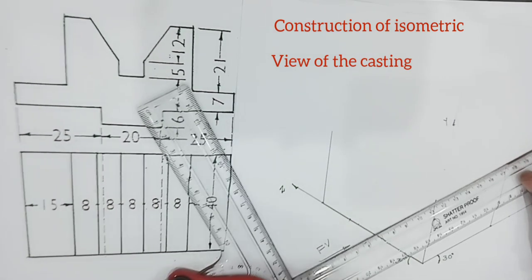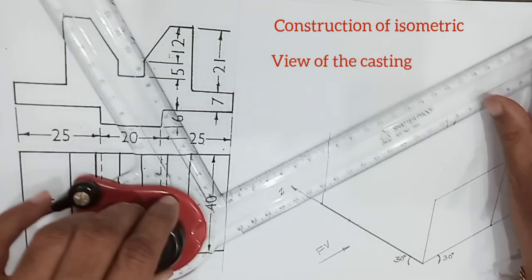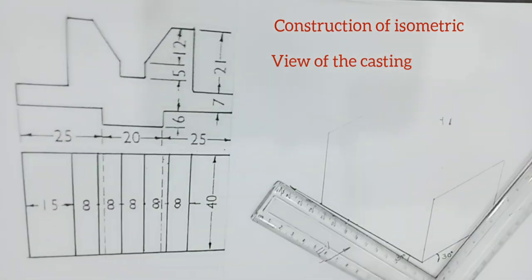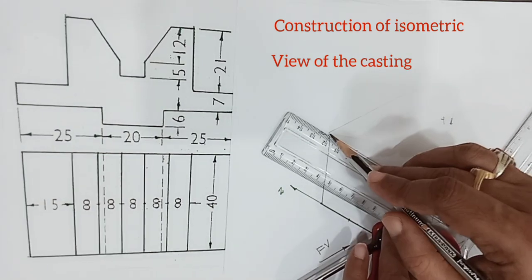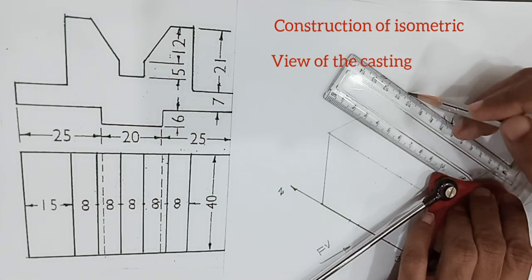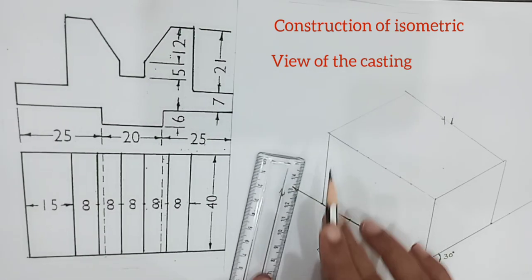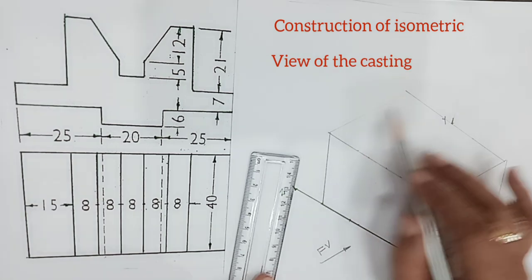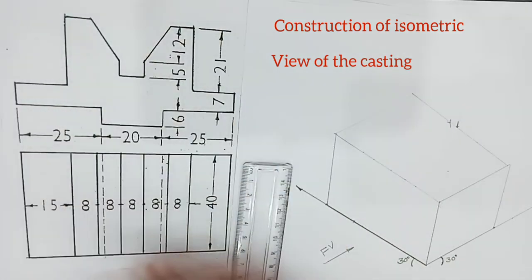Parallel to the x-axis, here we are choosing length along the z-axis and drawing parallel to the length line. After that, this is the front view face, this is the side view face, and this is the top view face. First we will draw the front view here.